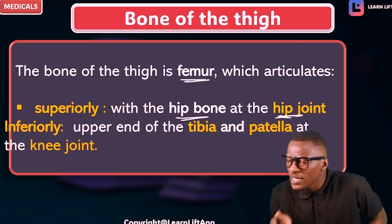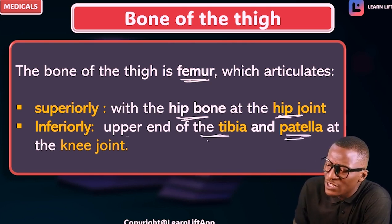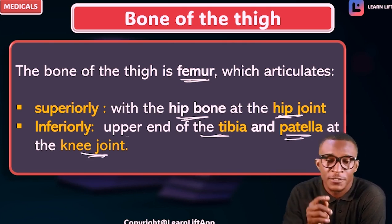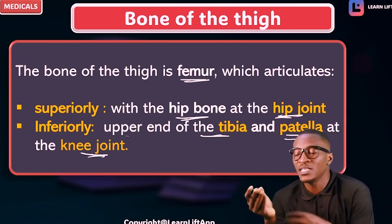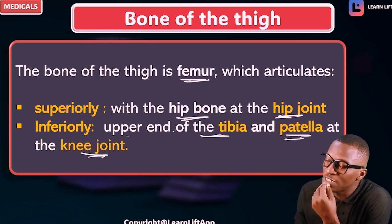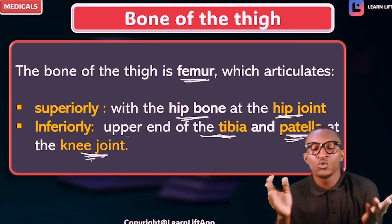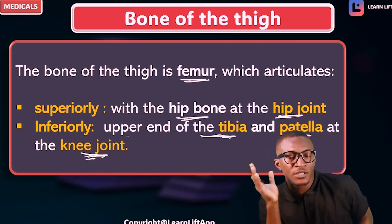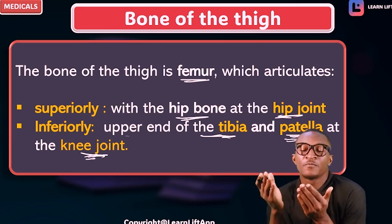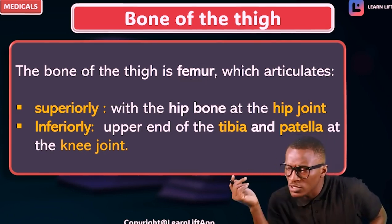Now inferiorly, take note that the femur articulates with the upper end of the tibia and the patella to form what we call the knee joint. So superiorly the femur articulates with the hip bone to form the hip joint, and inferiorly it articulates with the tibia and the patella to form the knee joint. Superiorly it forms the hip joint and inferiorly it forms the knee joint.